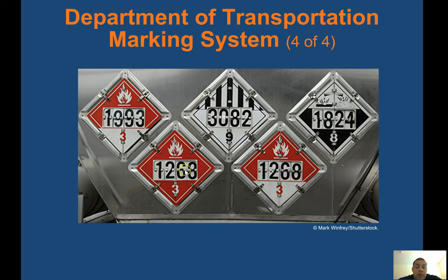Looking at placards: red means fire hazard. They use four triangles — yellow, white, red, and blue — and assign a number up to four. Four is the most volatile category; one is the least volatile. So three is pretty flammable.